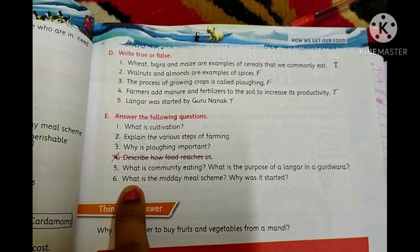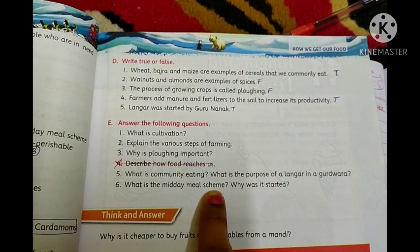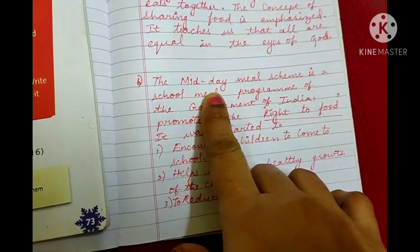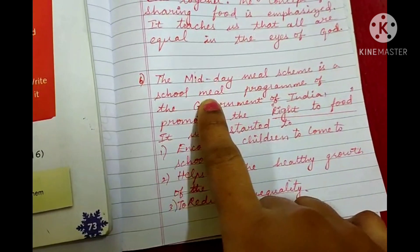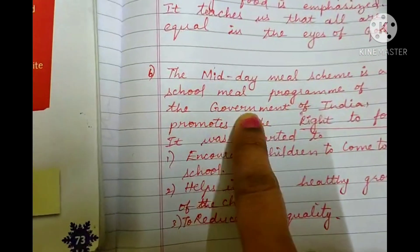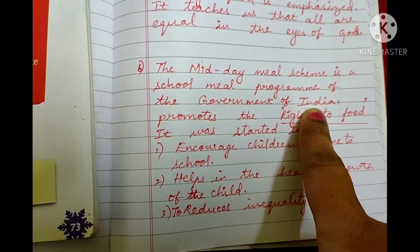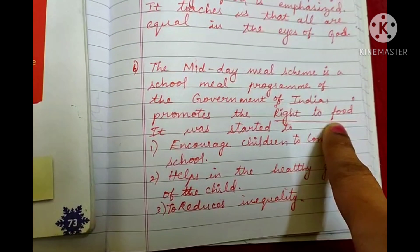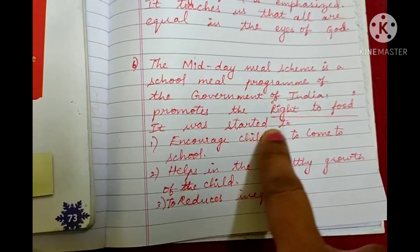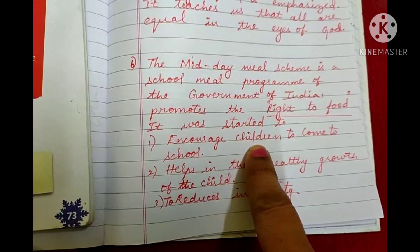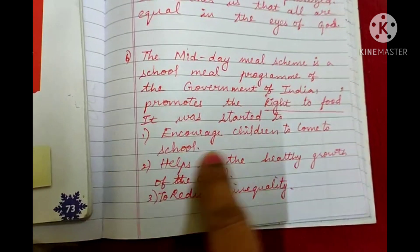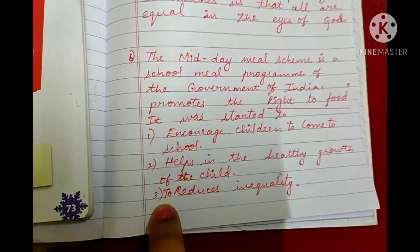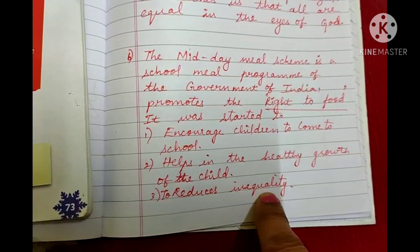Sixth question: what is the midday meal scheme and why was it started? The midday meal scheme is a school meal program of the government of India. It promotes the right to food. It was started to encourage children to come to school, helps in the healthy growth of the child, and to reduce inequality.